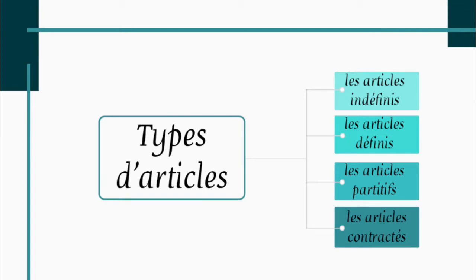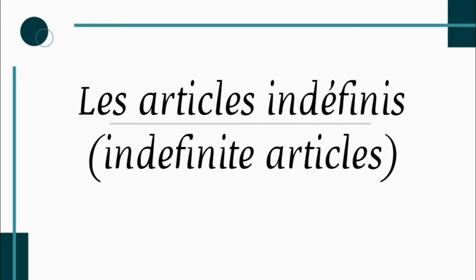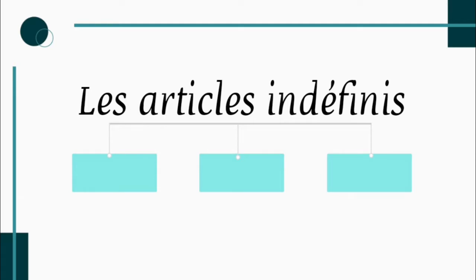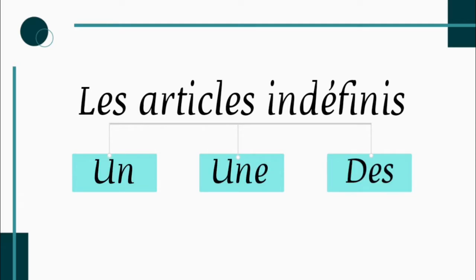Now, we are going to cover each of these categories in detail. So, let's first begin with les articles indéfinis — that means indefinite articles. There are three types of indefinite articles: un, une, des. Un is used with masculine singular nouns. Une is used with feminine singular nouns. Des is used with plural nouns — it could be masculine plural or feminine plural. Let's understand their usage with the help of examples.